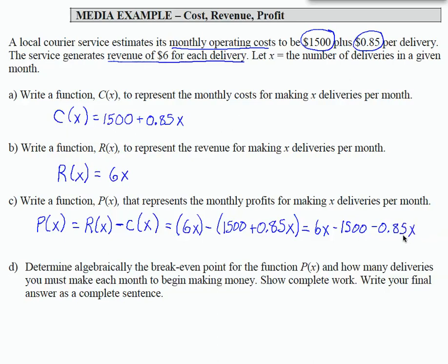If I now combine like terms, I can obtain a final representation for my profit function. 6X minus 0.85X gives me 5.15X minus 1500. So this is our profit each month when we make X deliveries.